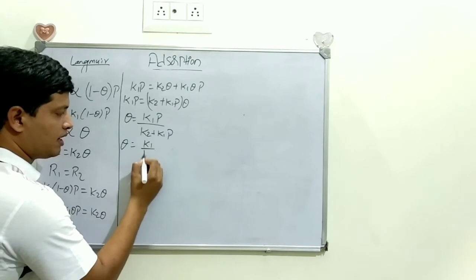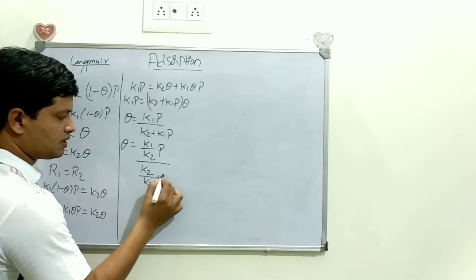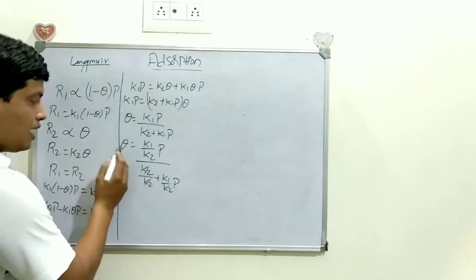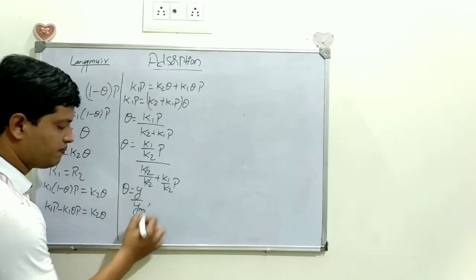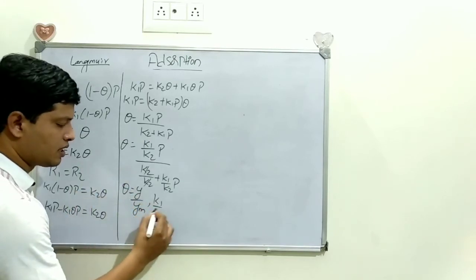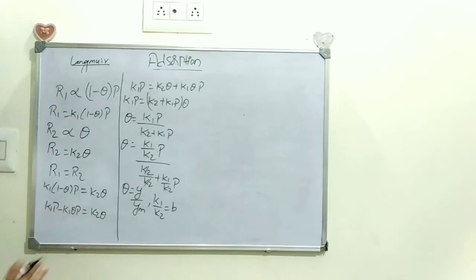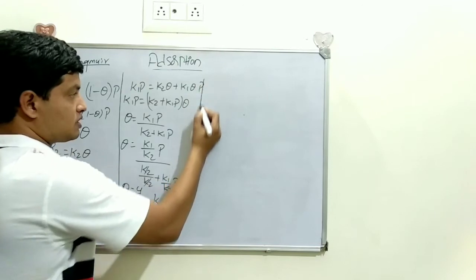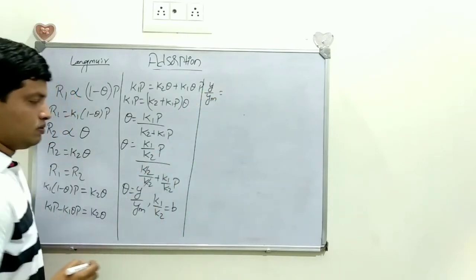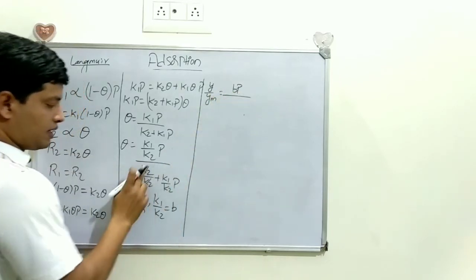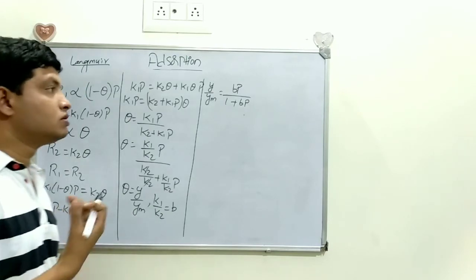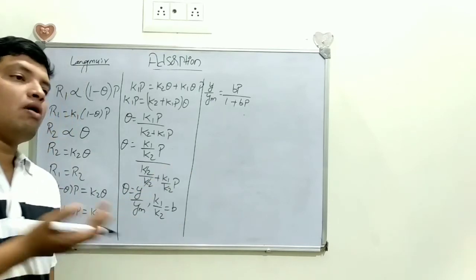K2/K2 cancels to give 1 in the denominator. Now substitute: theta = y/ym, and let b = K1/K2 (a constant, since constant divided by constant is a constant). Substituting into the equation: y/ym = bP / (1 + bP).